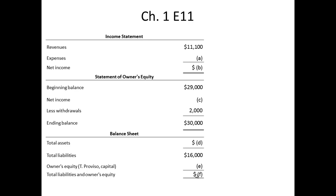Principles of Accounting 1, Chapter 1, E-11. We're looking at the relationship between the three financial statements: the income statement, the statement of owner's equity, and the balance sheet.